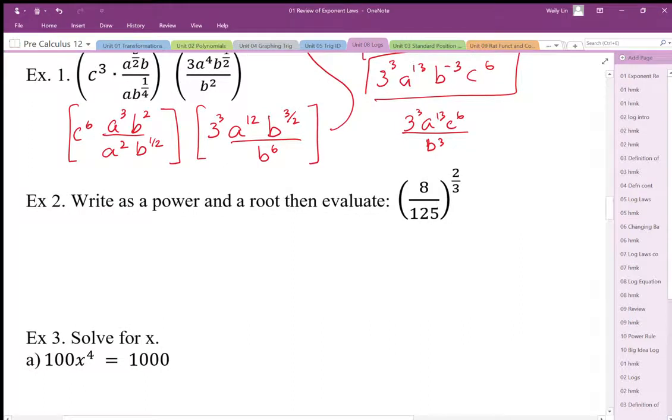Here we want to express as a power and a root, so I'm going to apply the root first—cube root of 8—then we're going to square it. There's our power, there's our root. I'm going to cube root 125 and then square that.